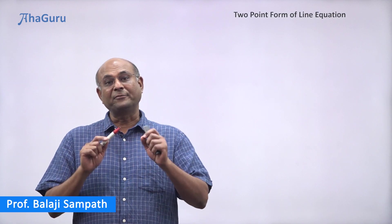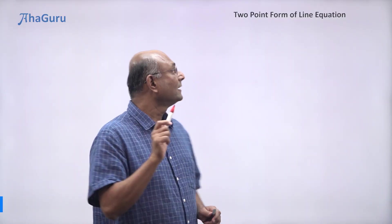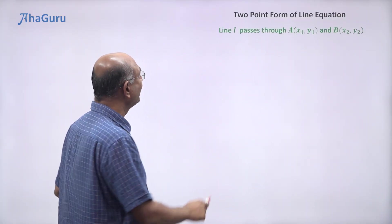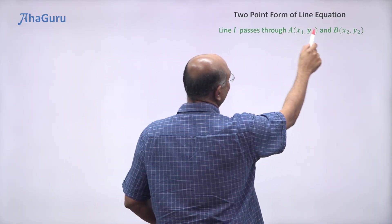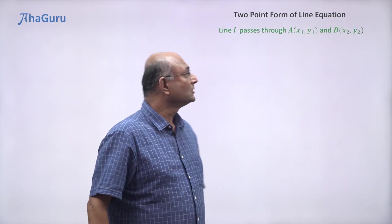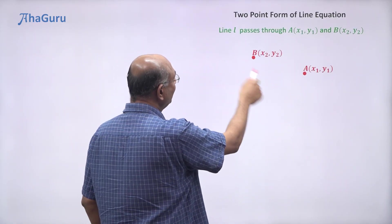We are now going to look at a different way of writing the equation of a straight line. In this case we have two points on the line that are given, so line l passes through A(x₁, y₁) and B(x₂, y₂). So these two are given points, line passes through both of them.